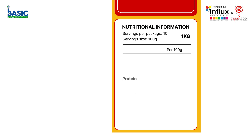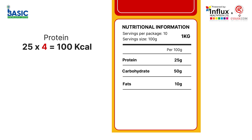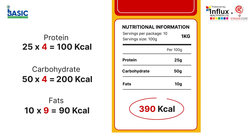Let's say we have a label and it reads: protein 25 grams, carbohydrate 50 grams, and fats 10 grams. How does the ideal calculation work? Protein factor is 4, so 25 × 4 gives 100 kilocalories. Carbohydrate: 50 × 4 gives 200 kilocalories. Fat factor is 9, so 10 × 9 gives 90 kilocalories. The total here is 390 kilocalories. This is an ideal condition.